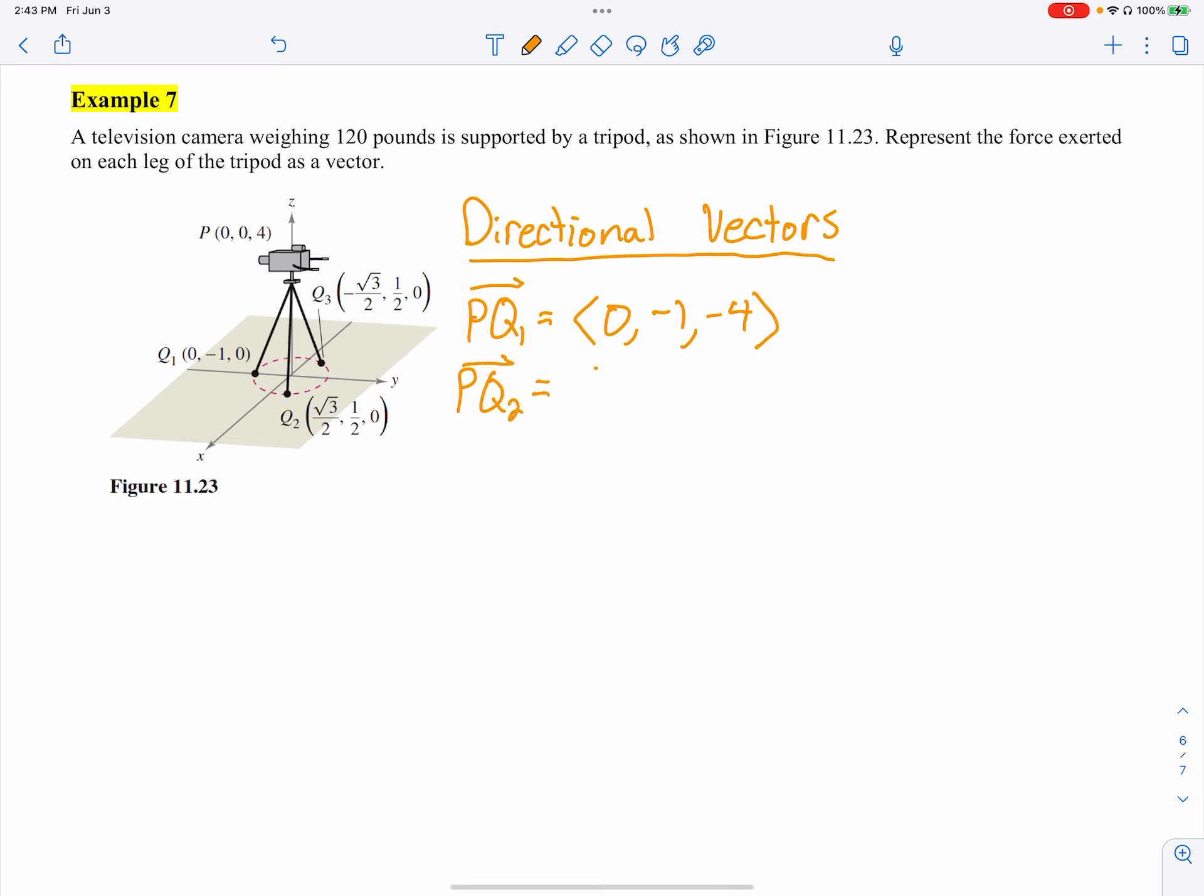These are just directions, just what way it's going and how long. So Q2, I got radical 3 over 2, 1 half, and then negative 4.